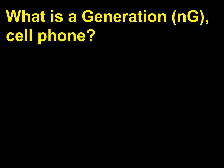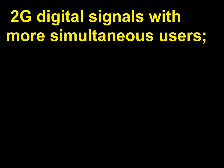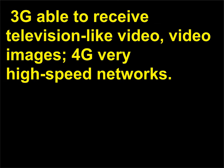What is a generation cell phone? 1G analog voice phone calls. 2G digital signals with more simultaneous users. 3G able to receive television like video, video images. 4G very high speed networks.